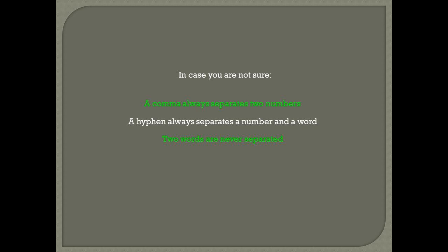Rule eight. A comma always separates two numbers. A hyphen always separates a number and a word. Two words are never separated.